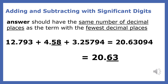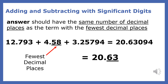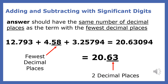When adding and subtracting significant digits, your answer should have the same number of decimal places as the term with the fewest decimal places. Looking at this addition, the number that has the fewest decimal places is 4.58 — it has two decimal places — so our answer should have two decimal places.